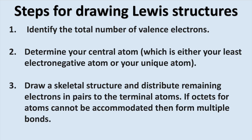Since we have seen what Lewis structures look like, let's go ahead and learn how to draw these structures. When drawing these structures, you want to follow these three steps. First, identify the total number of valence electrons. Second, determine your central atom, which is either your least electronegative atom or your unique atom. Third, draw a skeletal structure and distribute remaining electrons in pairs to the terminal atoms. If octets for atoms cannot be accommodated, then form multiple bonds. Also, keep in mind that if you have hydrogen in your system, it will always be a terminal atom because it can only form duets.